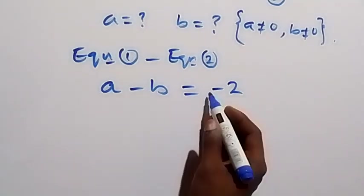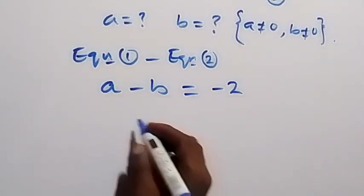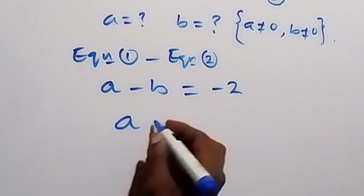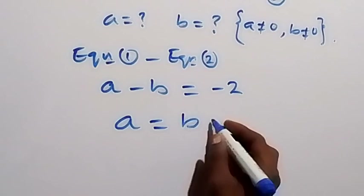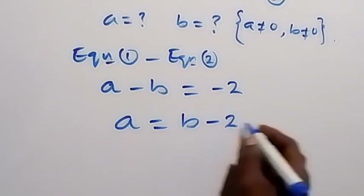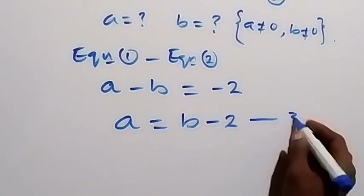And from here, we can bring minus B to this side, so as to make A the subject here. We have A now equals to B minus 2. Let's label this as equation 3 here.